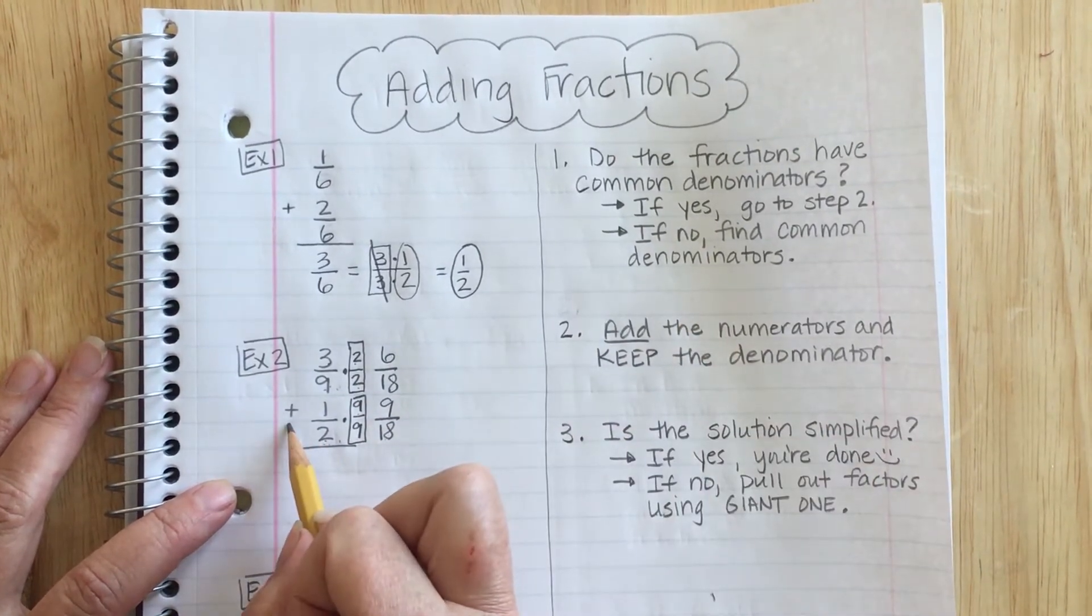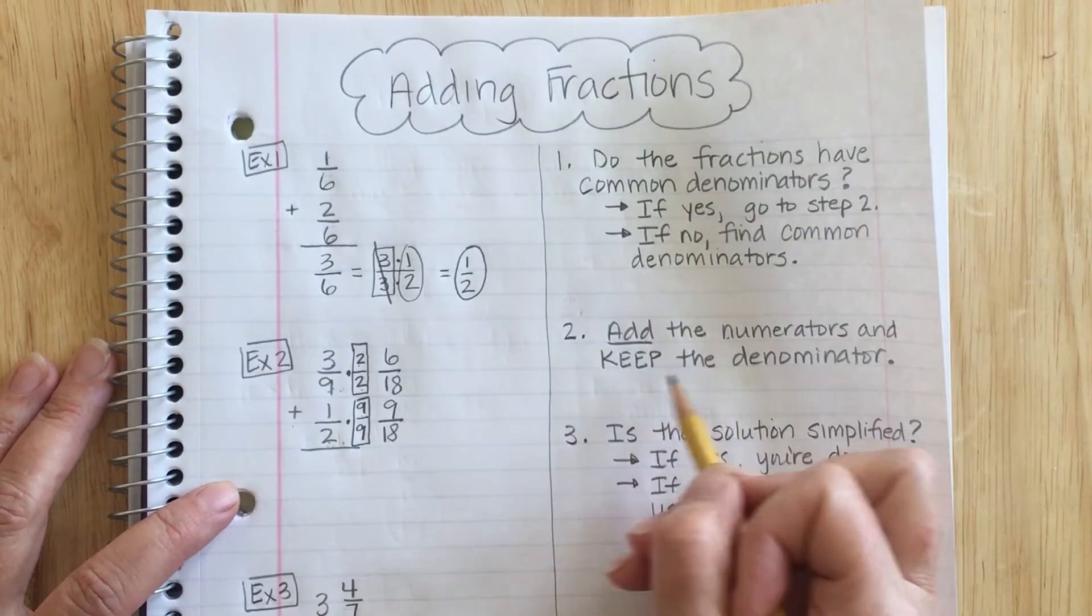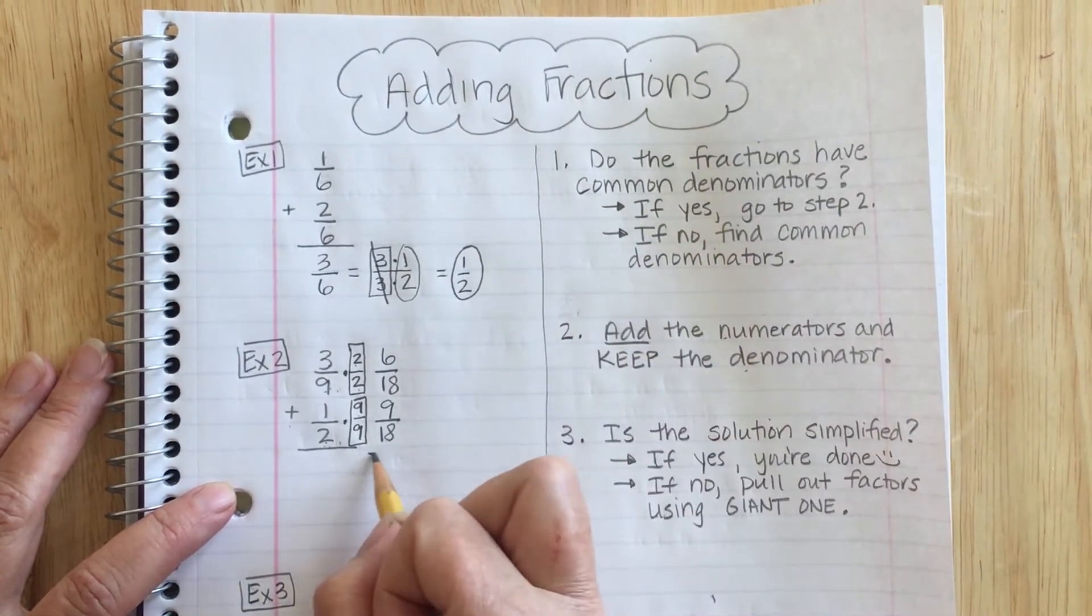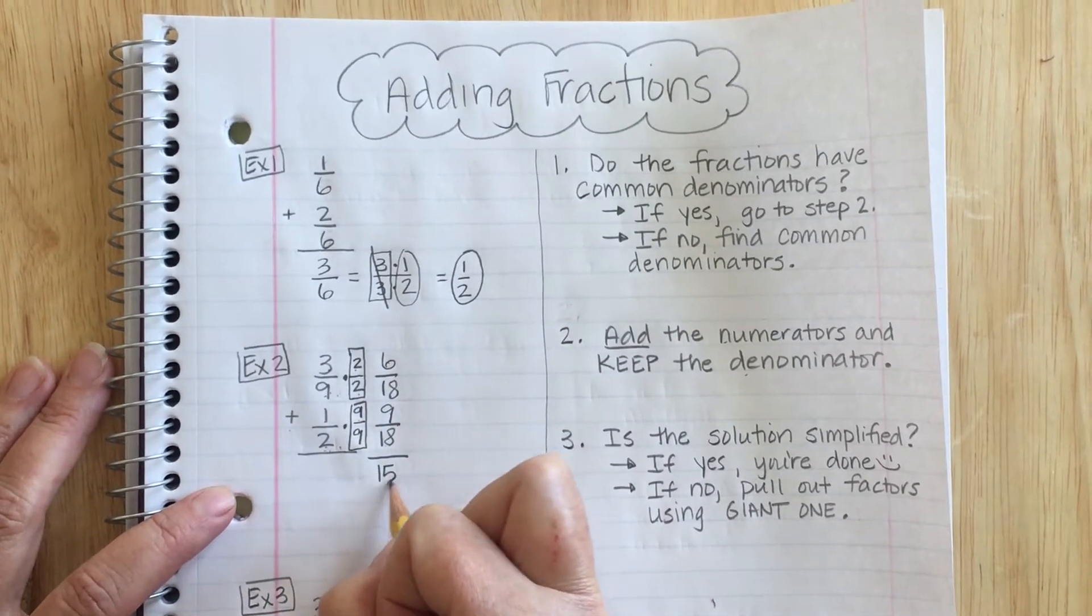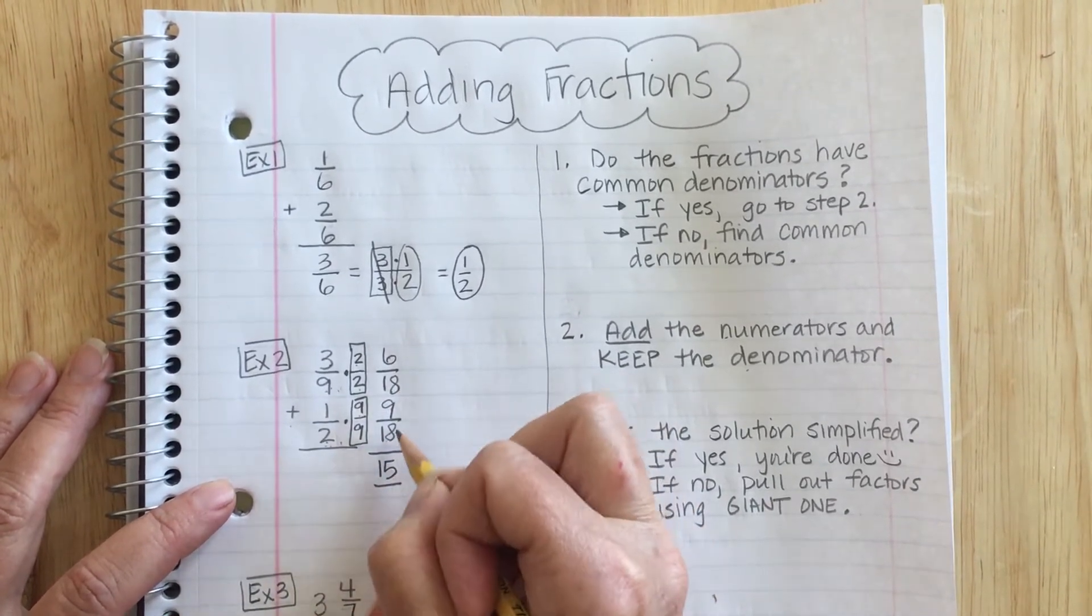Now I'm going to add. I'm going to move on to step 2. I add my numerators. Keep the denominator. 6 plus 9 is 15. Keep my denominator of 18.